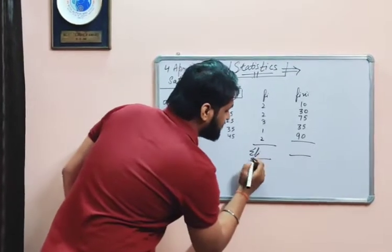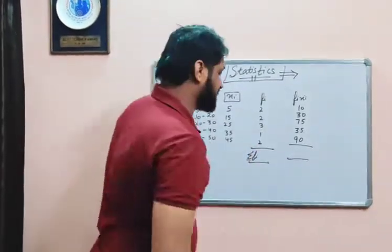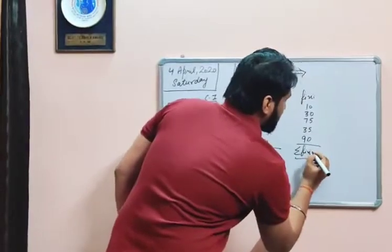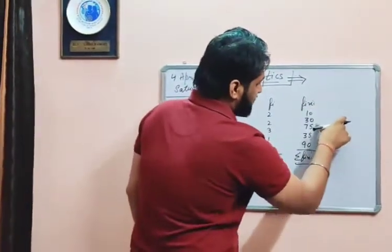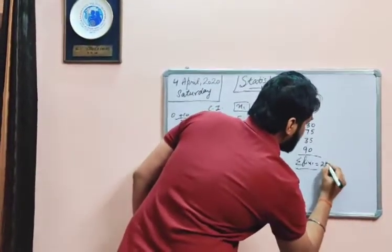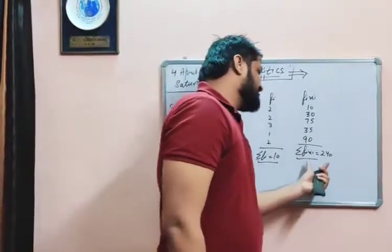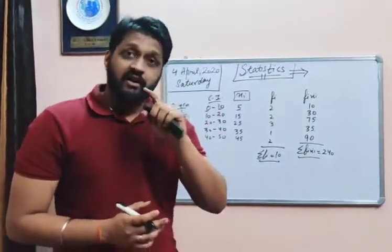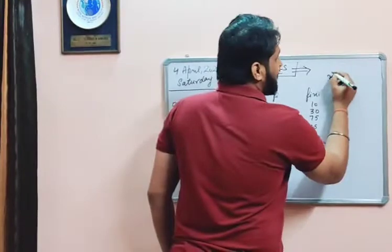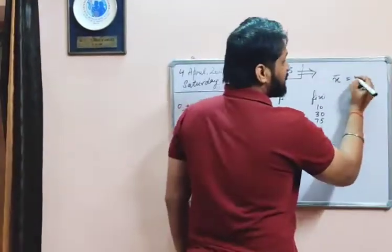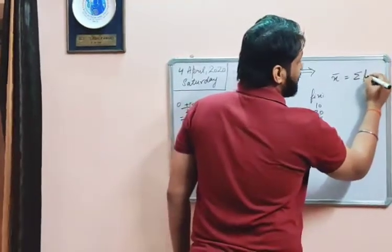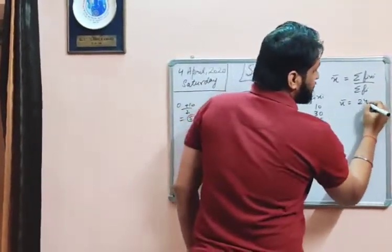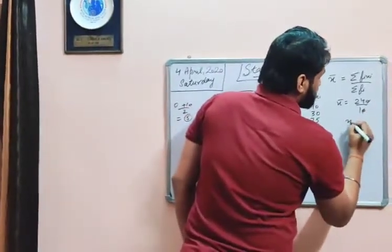The next step is to sum up the frequencies as well as the fᵢxᵢ values. Summation means to sum up all the observations. The summation of fᵢ is 2 + 2 + 3 + 1 + 2 = 10, and the summation of fᵢxᵢ is 10 + 30 + 75 + 35 + 90 = 240. The formula for mean by the direct method is: x̄ = Σfᵢxᵢ / Σfᵢ = 240 / 10 = 24.